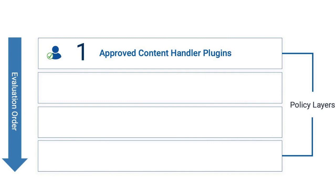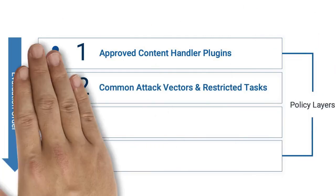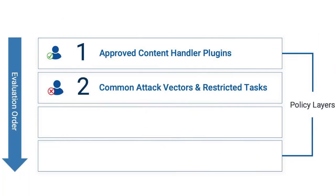Layer 1 contains exceptions for known good applications, such as approved content handler plugins. Layer 2 closes down common attack vectors typically exploited by malicious content. This is also where we define restricted tasks and applications that we do not want the end user to tamper with, such as disabling security controls.